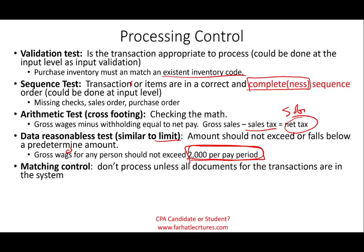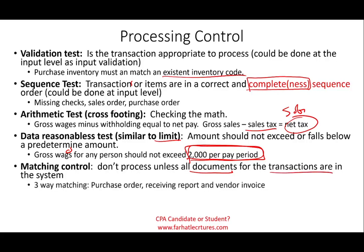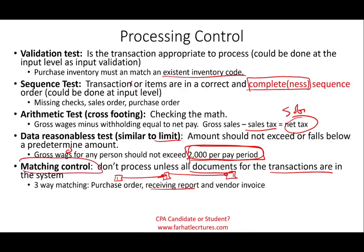We could also have matching control, which is pretty unique to the processing control, because you will not be able to process the transaction until all documents and conditions of the transaction are in the system and met. An example is three-way matching — we don't cut a check unless there's a purchase order, a receiving report, and a vendor invoice. In an accounting information system, each of those will have a unique number or key connecting them. As long as all three exist and went through their specific internal controls in the purchasing department, receiving department, and the vendor invoice, we cannot cut the check. This is matching control as part of processing control.